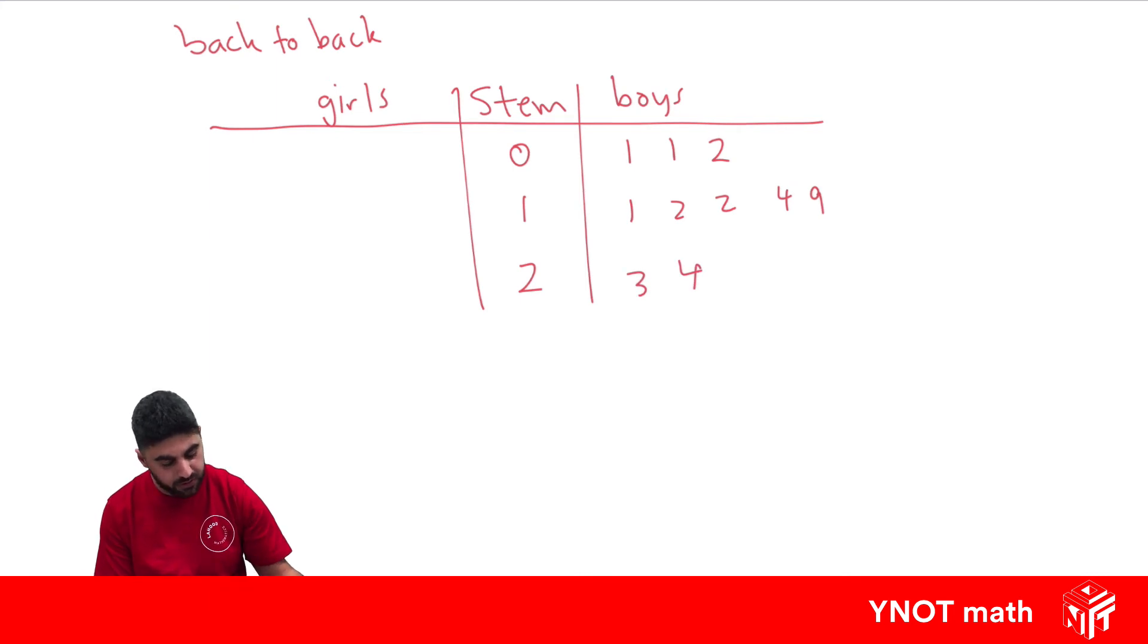And the numbers are in ascending order like that: 1, 1, 2, 1, 2, 2, 4, 9, and 3, 4. So these represent scores of 1, 1, 2, 11, 12, 12, 14, 19, 23, and 24. When we do the other side for the stem and leaf plot, the numbers have to go backwards.